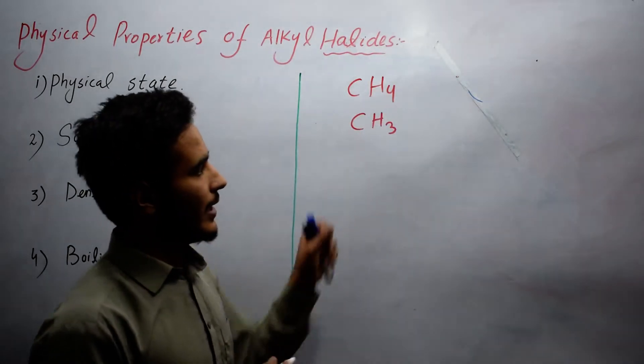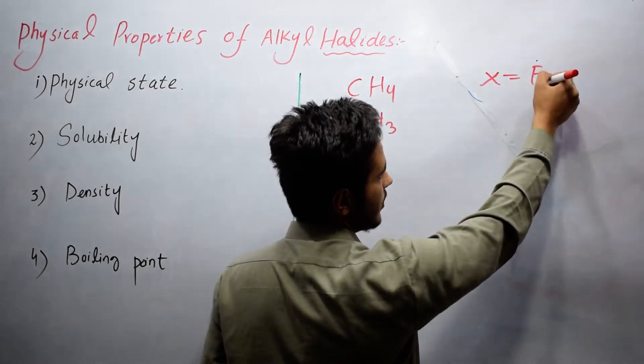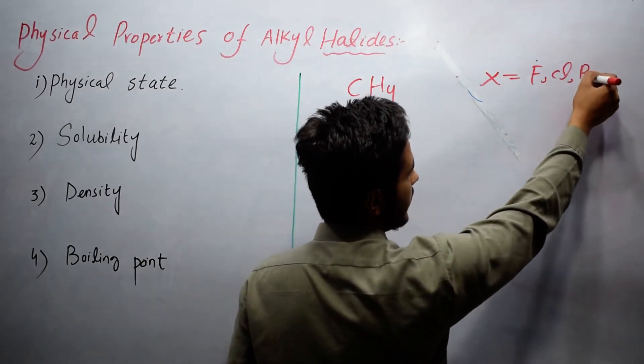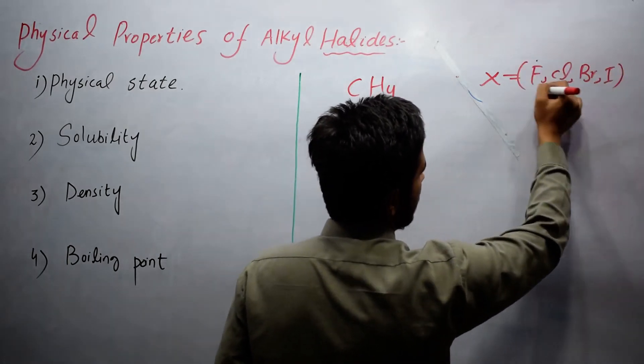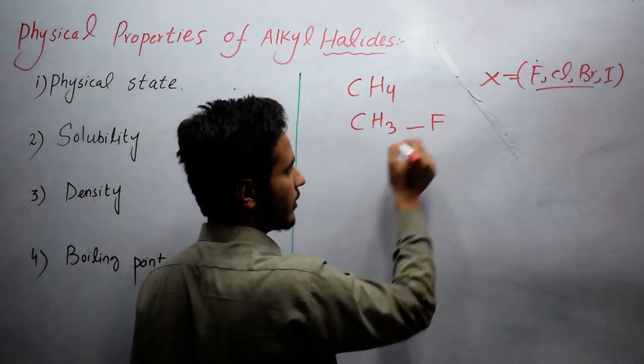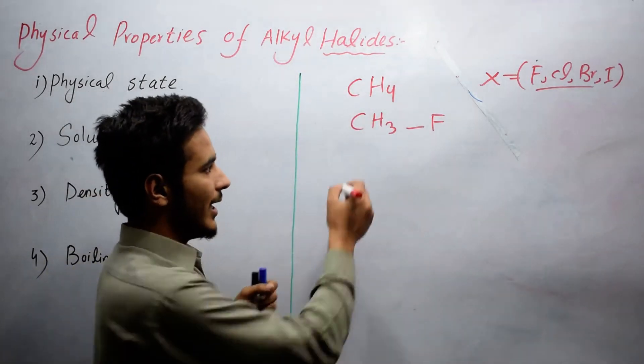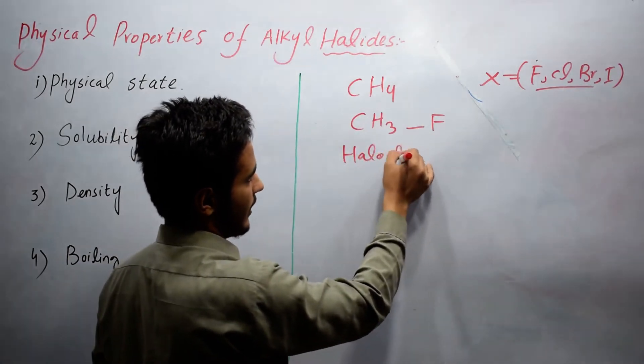Now we will add halogen, which is basically fluorine, chlorine, bromine, and iodine. In this case, consider fluorine. So now this is called alkyl halides or haloalkanes.